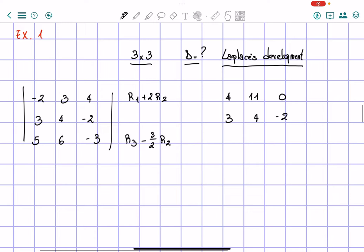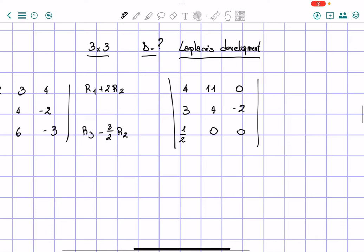Then row 3 will become: 3 half of 3 is going to be 9 half, and 5 minus 9 half will be equal to 1 half, which actually works pretty well for us. And then minus 0, and then here we have another 0.